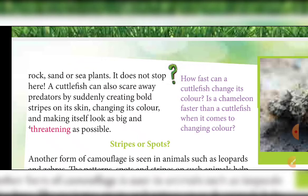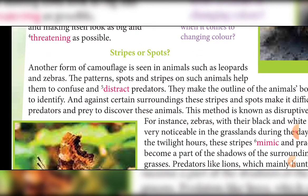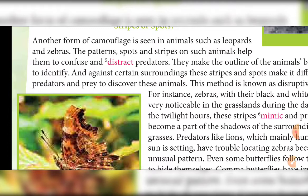So the cuttlefish has two or three properties: it can change the color of its skin, change the texture of its skin, create stripes on its skin, and it can also increase its size — making itself look as big and as threatening as possible. These are the multiple abilities of the cuttlefish discussed in this chapter.